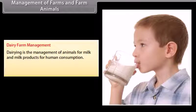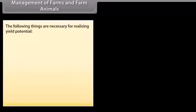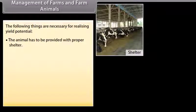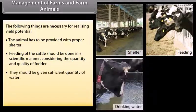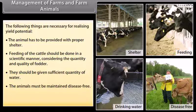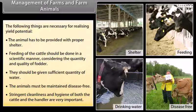Dairy farm management: Dairy is the management of animals for milk and milk products for human consumption. Milk yield is dependent primarily on the quality of breed. The animal has to be provided with proper shelter, feeding of the cattle should be done in a scientific manner considering the quantity and quality of fodder, and they should be given sufficient quantity of water.